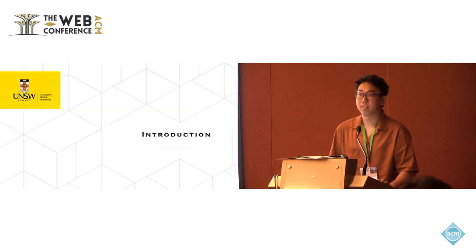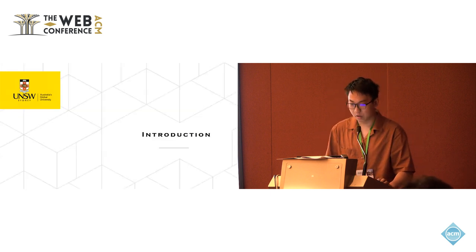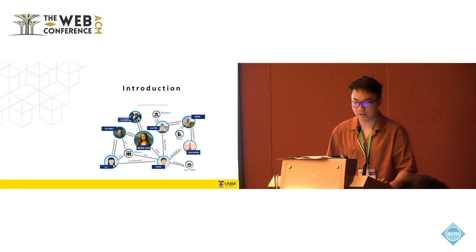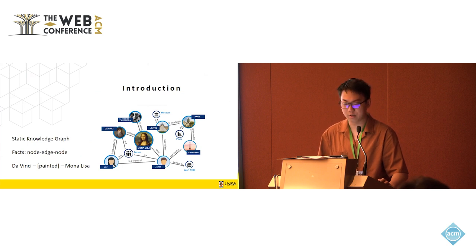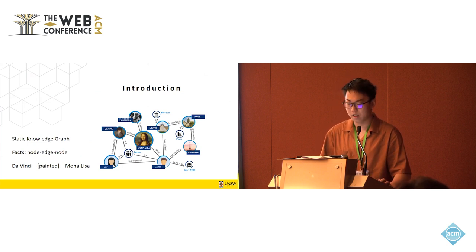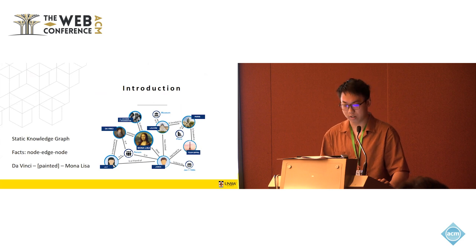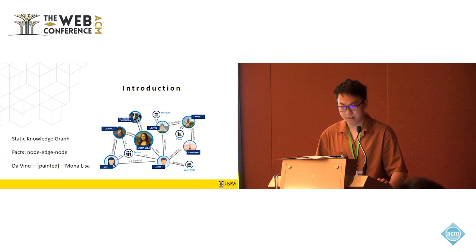So the first part is the introduction. What is the knowledge graph? It's fundamentally a direct graph designed to represent knowledge in a structured form. At its core, the KG comprises entities represented as nodes, and the relationships between them, which depict the edges in the process, plus attributes that further describe them. This knowledge structure is how KG stores and represents knowledge. Here is an example: DaVinci painted Mona Lisa. This is a clear fact.